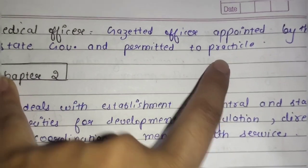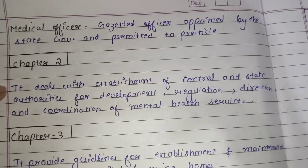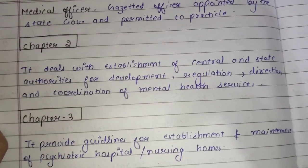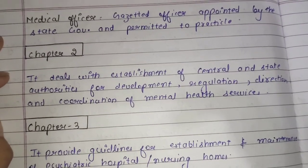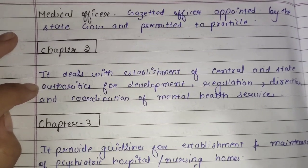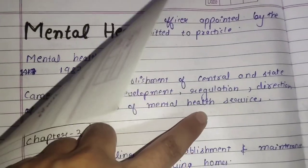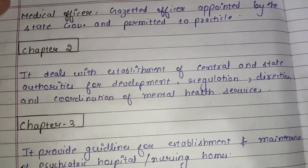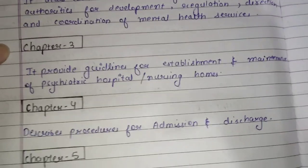Next, we will study Chapter 2 of the Mental Health Act. Chapter 2 deals with the establishment of central and state authorities for the development, regulation, direction, and coordination of mental health services.